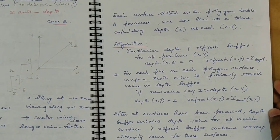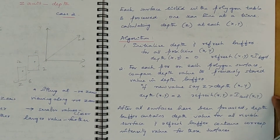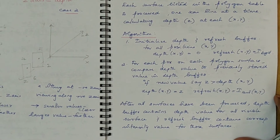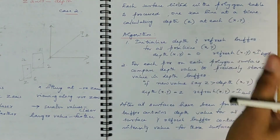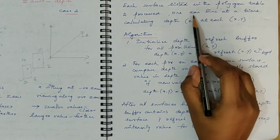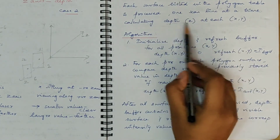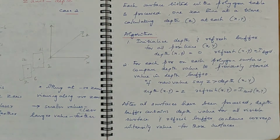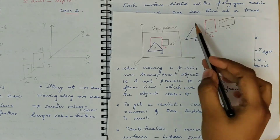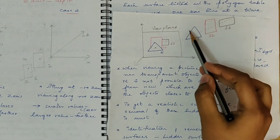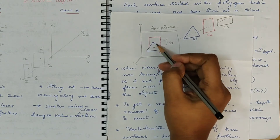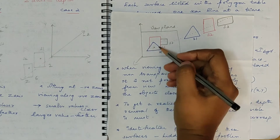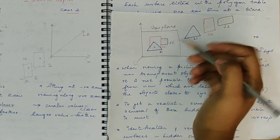We process the surfaces one by one. Each surface listed in the polygon table will be processed one by one in order to calculate the depth, one scan line at a time, calculating the depth at each XY position. For each pixel position, the depth value will be calculated, and depending upon the depth value, which surface is visible and which is not will be determined.